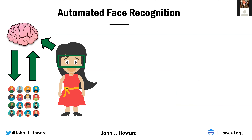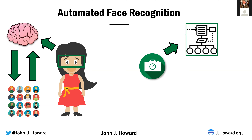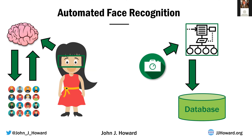Automated face recognition means teaching a computer system how to do the exact same thing your brain does, but instead of using eyes, computers have to use cameras. Instead of using a brain, computers use something called an algorithm, and instead of using memories to recall friends, computers use databases.